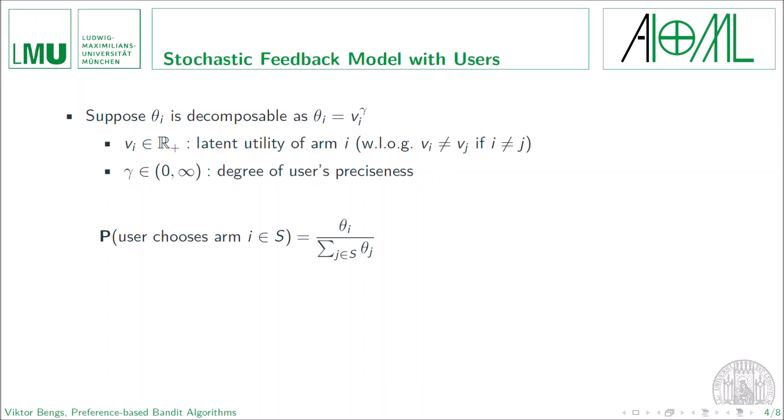If we recall the MNL model from above and using the representation for the thetas, we see that for the extreme limit cases for gamma, we have that the choice probability will correspond to a uniform distribution on the preselection subset S if gamma goes to zero. And if gamma goes to infinity, then the choice probability is simply the point mass on the arm with the highest latent utility among the preselection.